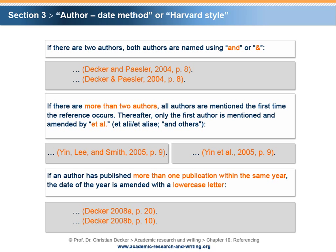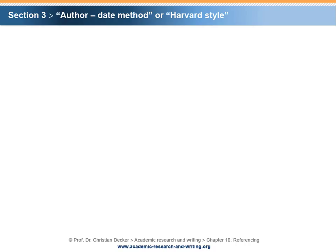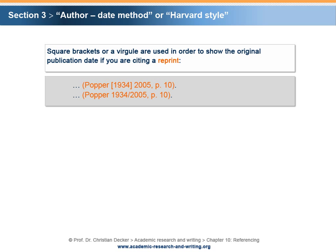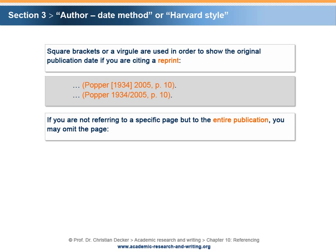If an author has published more than one publication within the same year, the date of the year is amended with a lowercase letter. Square brackets or a virgule are used to show the original publication date if you are citing a reprint. If you are not referring to a specific page but to the entire publication, you may omit the page.